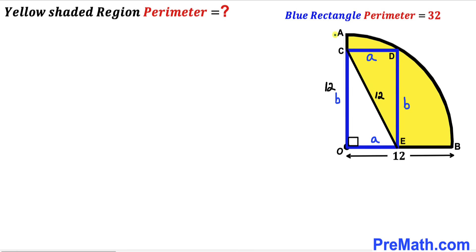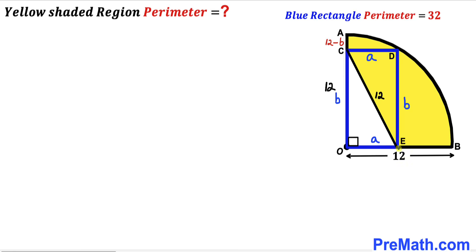Now we calculate the small vertical segment AC. The whole radius is 12 and this segment equals 12 minus b. Likewise, we calculate segment EB. The whole radius is 12 and segment OE has length a, so the remaining segment EB equals 12 minus a.